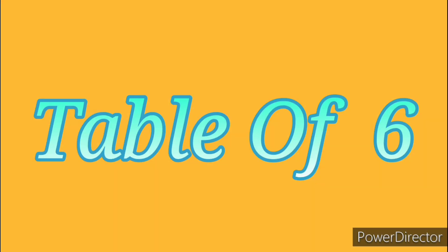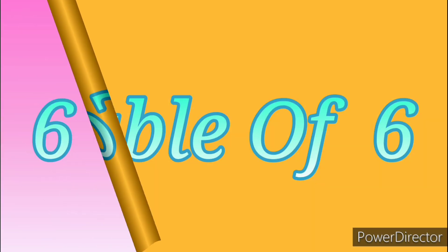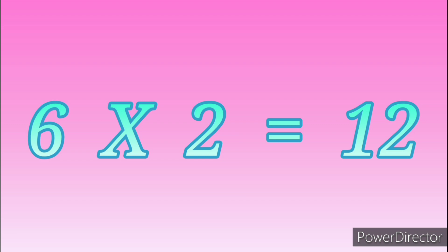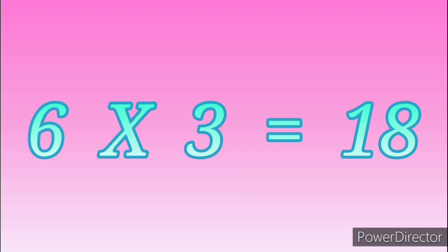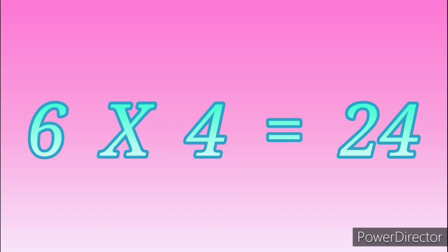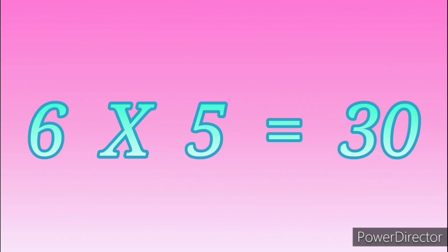Table of Six. Six ones are six. Six twos are twelve. Six threes are eighteen. Six fours are twenty-four. Six fives are thirty.